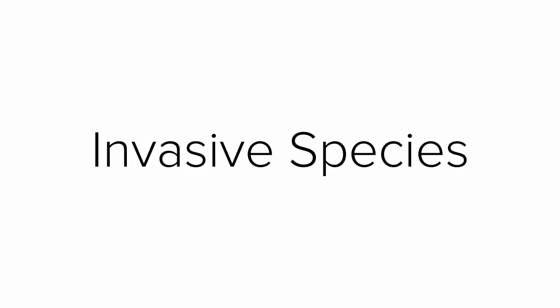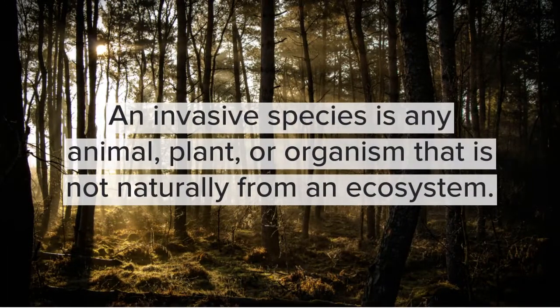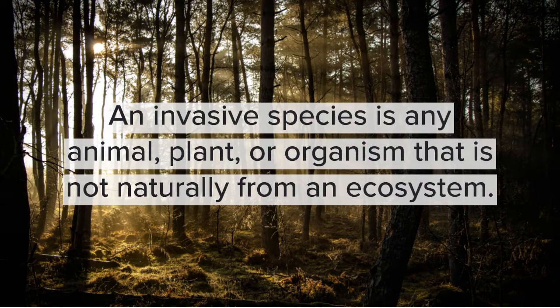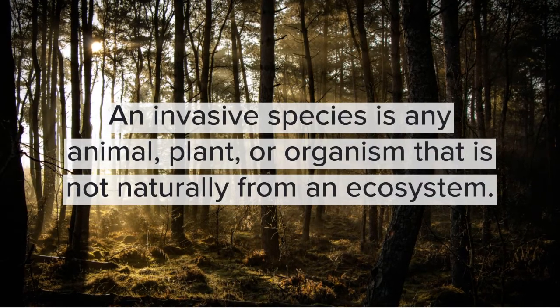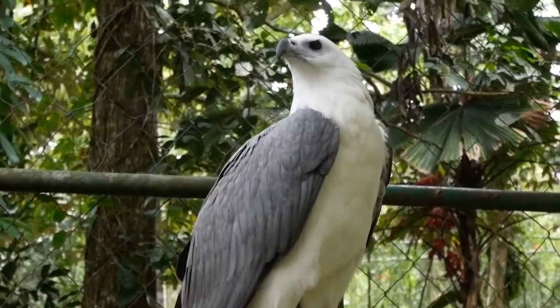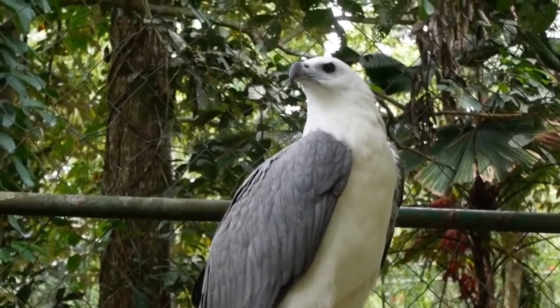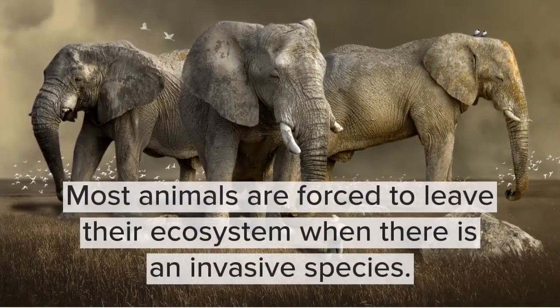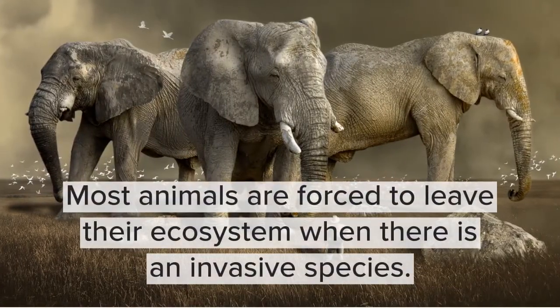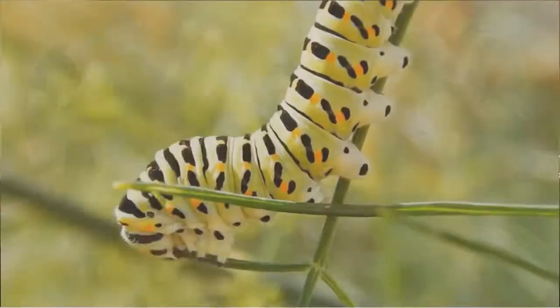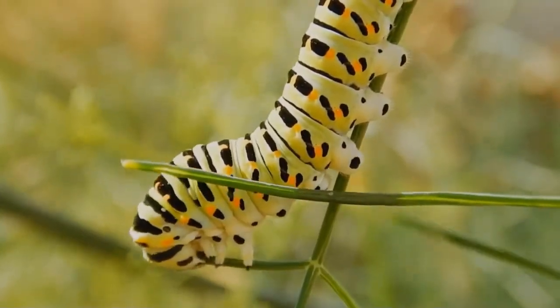4. Invasive species. An invasive species is any animal, plant, or organism that is not naturally from an ecosystem. Invasive species often cause harm to the natives. In the animal kingdom, invasive species may prey on other organisms that are below them in the food chain. This can cause a reduction in the number of certain animals, force others to leave their ecosystem, disrupt food chains, and may also cause extinction.